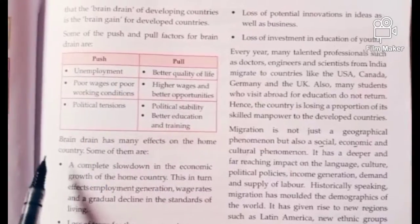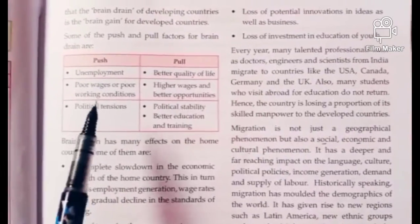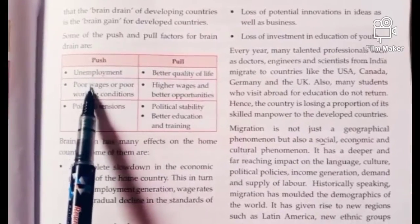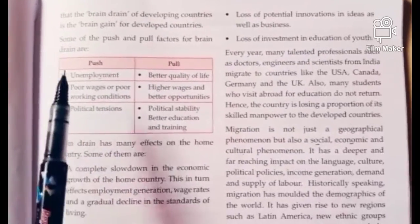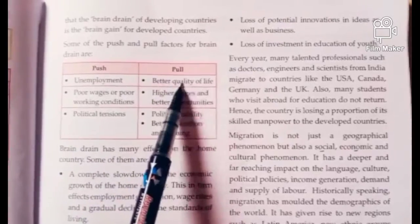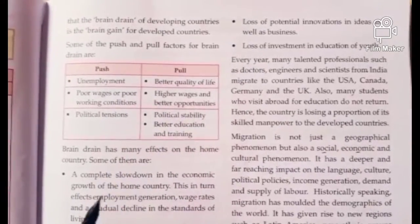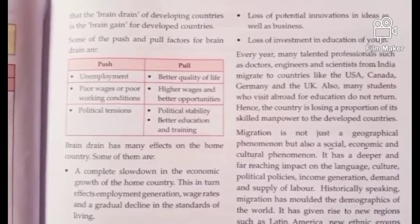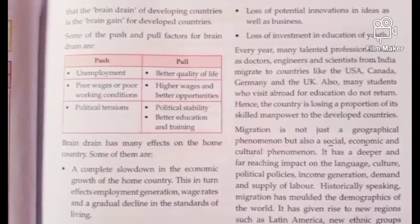What are the factors responsible for people moving from place to place? There are two factors: push and pull. Push factors are the forceful factors — unemployment, poor wages, poor working conditions, and political tensions — which force people to leave their country. Pull factors are attractive factors: better quality of life, higher wages, better opportunities, political stability, better education and training. These are the attractive points of developed countries, which cause highly skilled labor to move — this is brain drain.